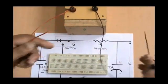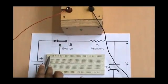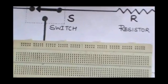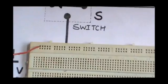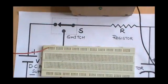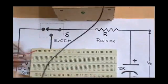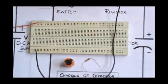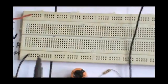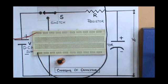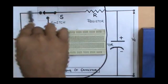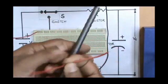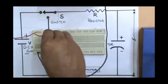Take the positive of the DC power supply and connect it in the first bus of the breadboard. You can place the positive wire in any one of the holes in the first bus. Now take the negative of the power supply and place that wire in the lower bus of the breadboard. We have to connect a switch to the positive of the power supply, so we are taking this wire as a switch. Insert this wire in any one of the buses as shown.